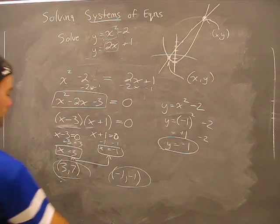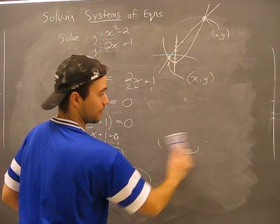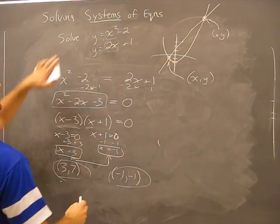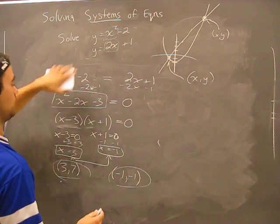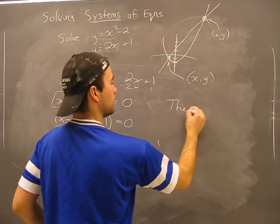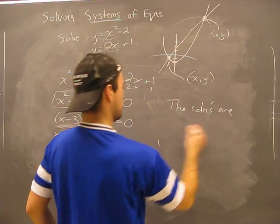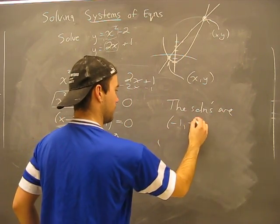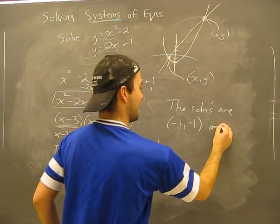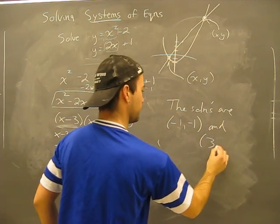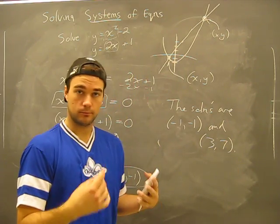So we're not done. We don't have a word answer yet. Okay, so solving this, we say the solutions are minus one, minus one, and three, seven. The end.